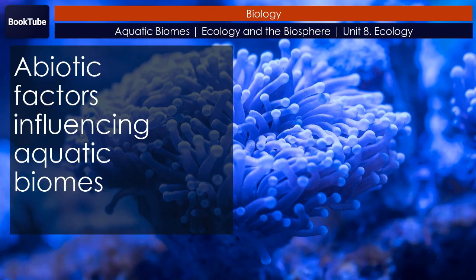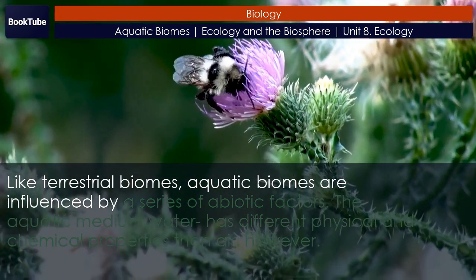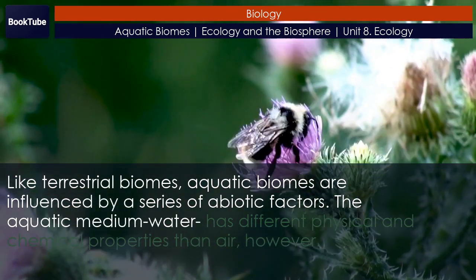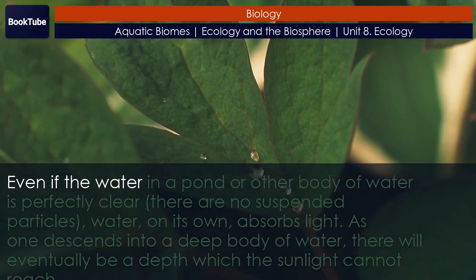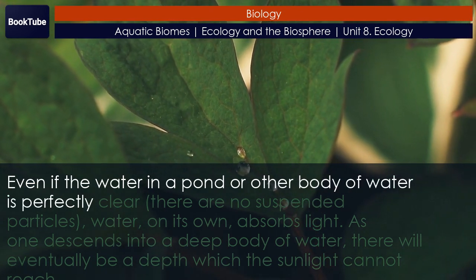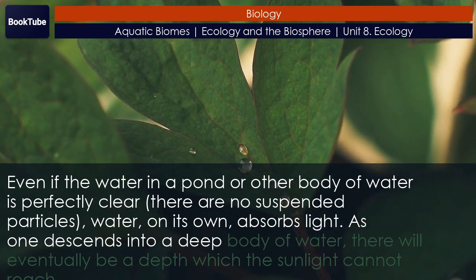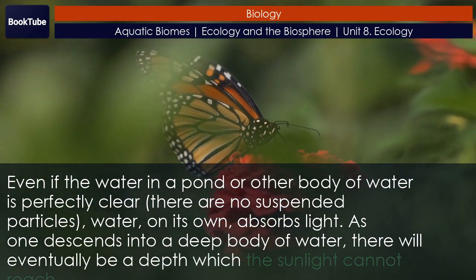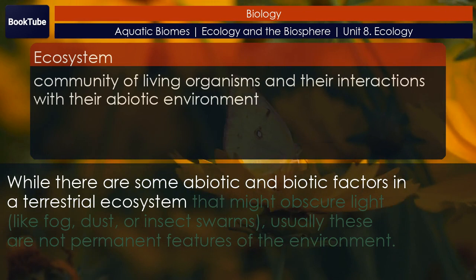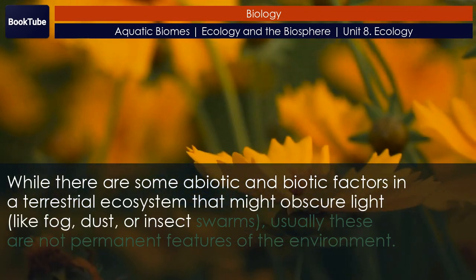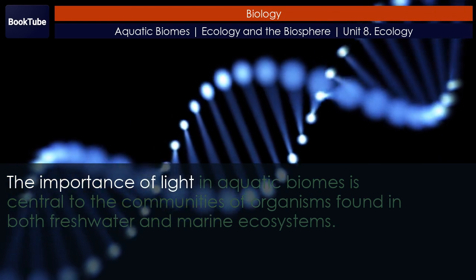Aquatic biomes are influenced by a series of abiotic factors, just like terrestrial biomes. The aquatic medium, water, has different physical and chemical properties than air. Even if the water in a pond or other body of water is perfectly clear with no suspended particles, water on its own absorbs light. There are some abiotic and biotic factors in a terrestrial ecosystem that might obscure light, like fog, dust, or insect swarms, but usually these are not permanent features of the environment.